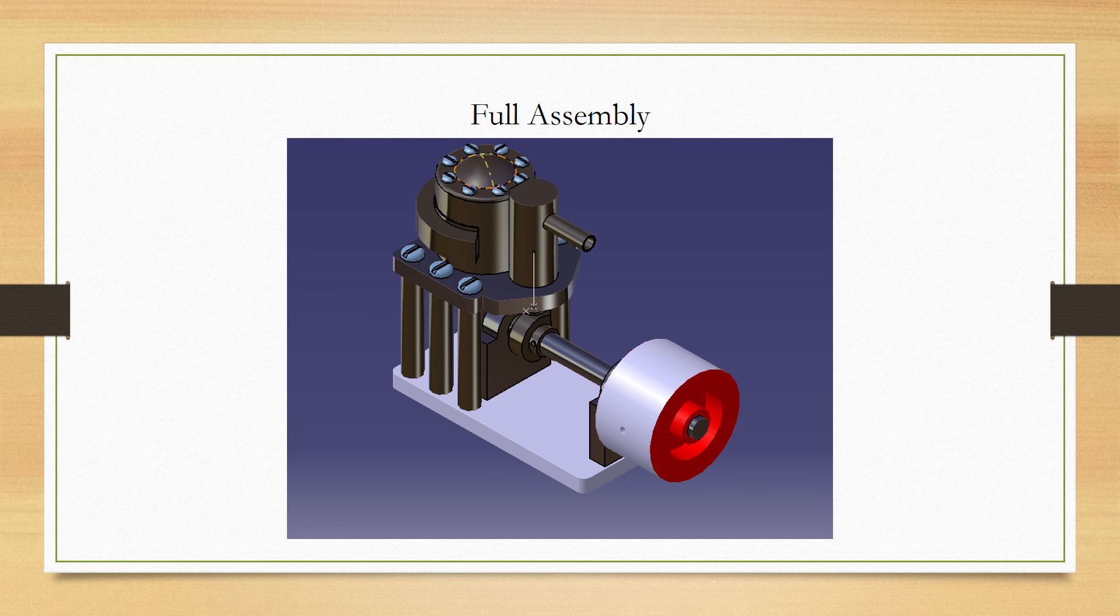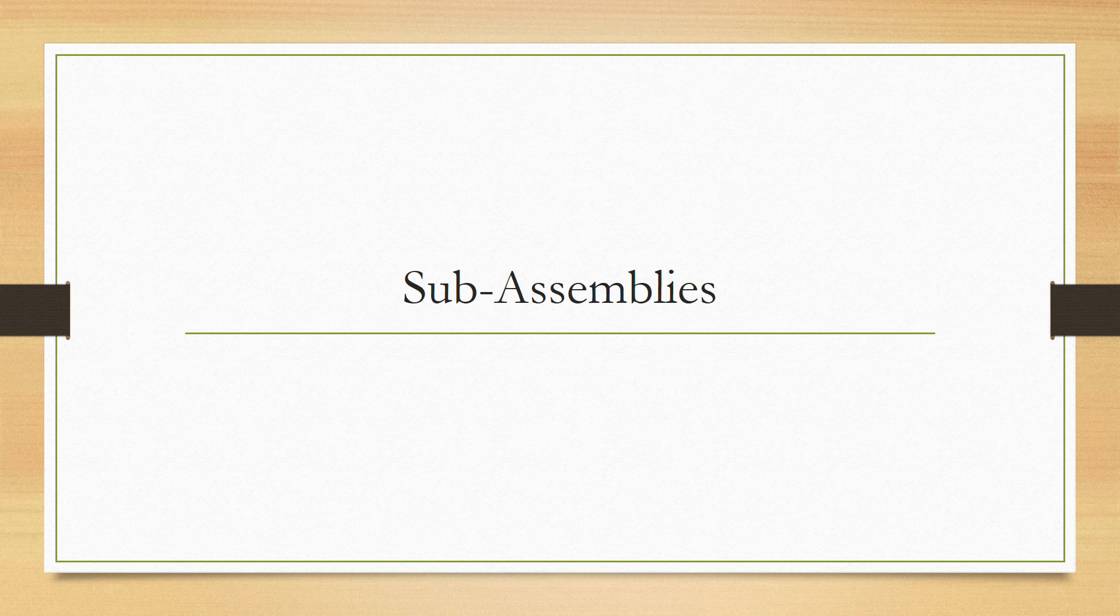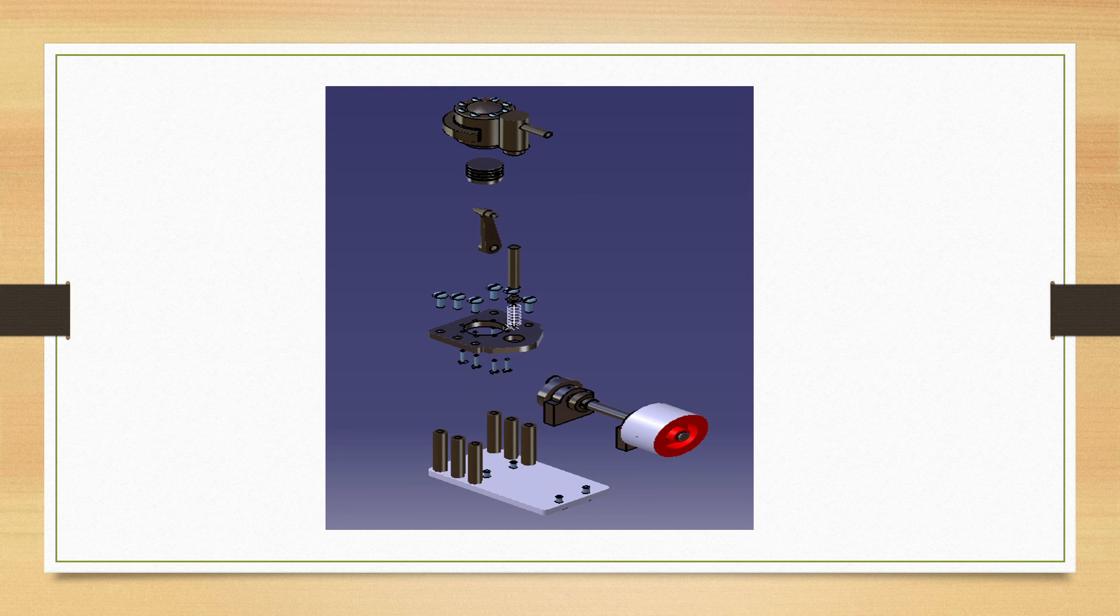Right here is our full assembly of the Husky steam engine. As you can see, there's three main sub-assemblies with a couple miscellaneous parts that didn't fit into a good category. This is the exploded view of the entire engine. The three main sub-assemblies are the base plate sub-assembly, the flywheel sub-assembly, and the top cylinder sub-assembly, with those miscellaneous parts in between the cylinder plate and the top cylinder sub-assembly.